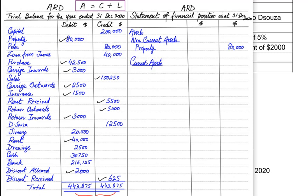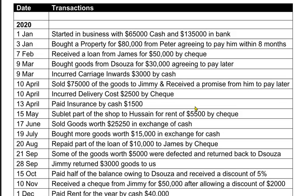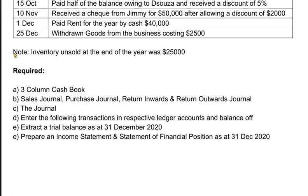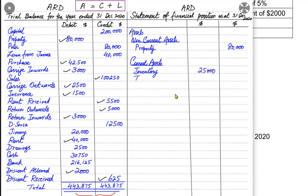In current assets, we always write closing inventory — because the SOFP is prepared at year end. Closing inventory is never given in the trial balance; it is always given as additional information in the notes. In this question, closing inventory is 25,000. Trade receivables are our customers who owe us money — in this exercise the customer is Jimmy who owes 20,000 — but we write the collective label 'trade receivables' rather than the individual name.